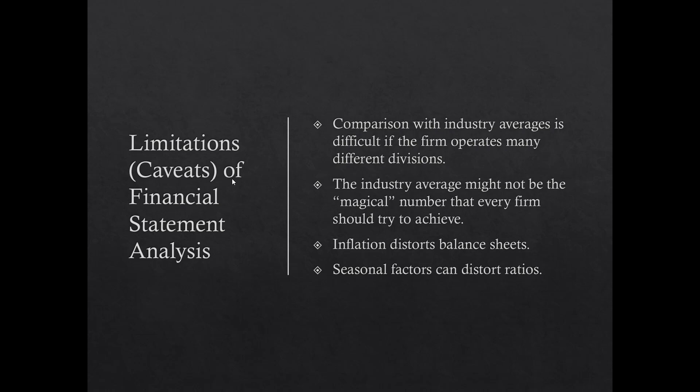Inflation can distort balance sheets — a company like Microsoft that bought its campus in 1986 might show it at nearly zero book value due to accumulated depreciation, even though the real value is far higher, making return on assets look artificially better than a newer company. Seasonal factors can also distort ratios — retailers and manufacturers build inventory ahead of Christmas, so the timing of your balance sheet cutoff can negatively impact inventory-related ratios due to seasonality.